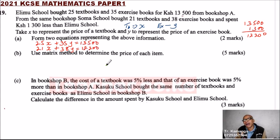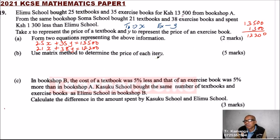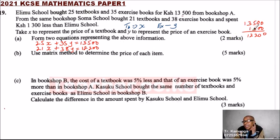If you are able to get that, you get two marks — one mark for each equation. And don't forget to calculate the amount spent by Erimu by subtracting to find the correct total.